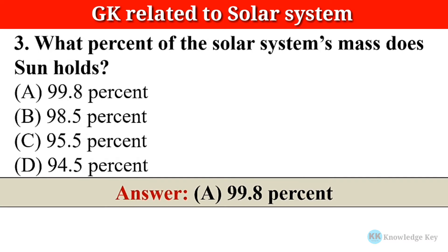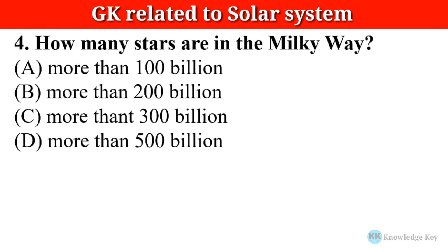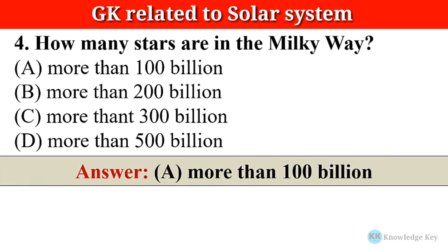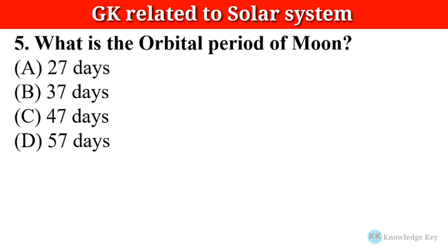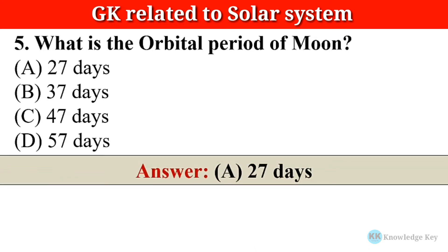99.8%. Question number four: How many stars are in the Milky Way? The correct answer is option A — more than 100 billion. Question number five: What is the orbital period of the Moon? The correct answer is option A — 27 days.